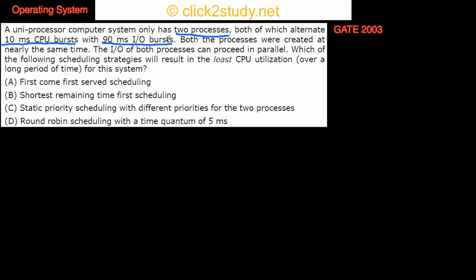For both of these processes, for 10 milliseconds the process will run on CPU, and for the next 90 milliseconds the process does IO — input/output. Both processes were created at nearly the same time, so they both start at the same time. The IO of both processes can proceed in parallel, but CPU cannot be parallel because there is only one CPU.